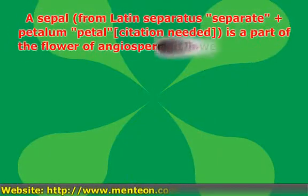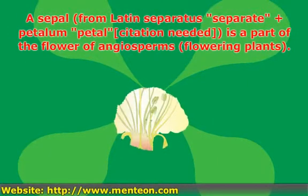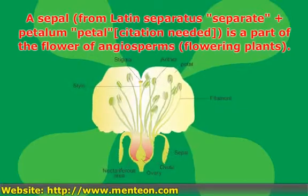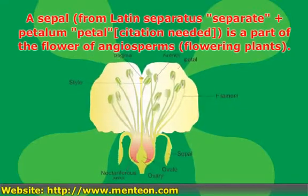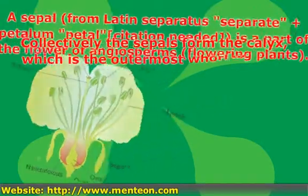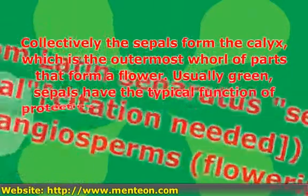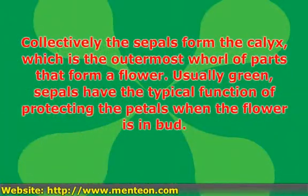A sepal, from Latin 'separatus' (separate) plus 'petalum' (petal), is a part of the flower of angiosperms, flowering plants. Collectively the sepals form the calyx, which is the outermost whorl of parts that form a flower.